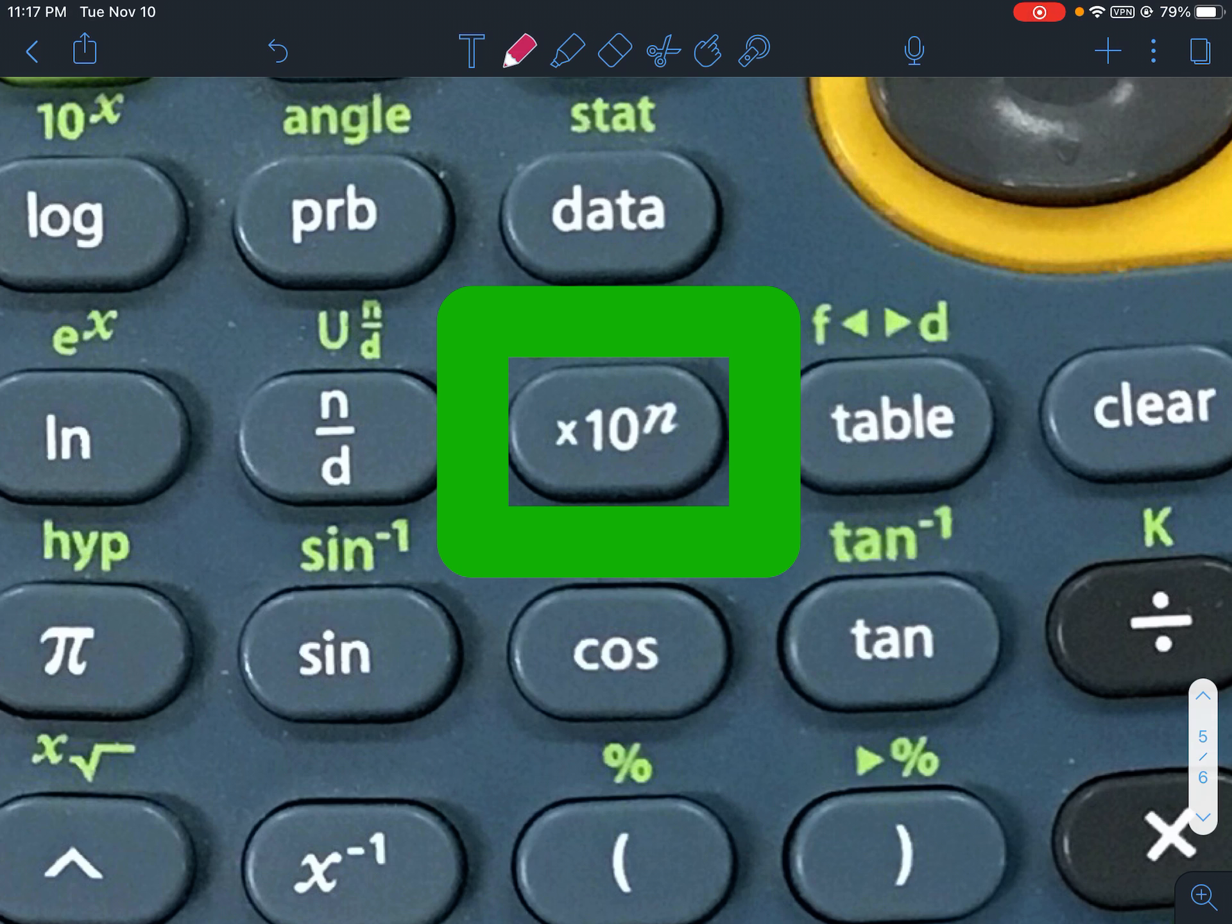So if I wanted to put in 4.5 times 10 to the 5th, I would put in 4.5 and then I would hit that button and then all I'd have to do is then put in the exponent. So if you're using the school calculator or one like the school calculator, that is the button you would want to use. It makes it very easy to put in scientific notation.